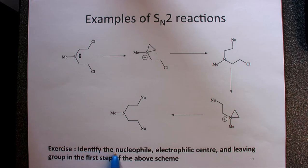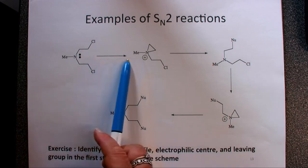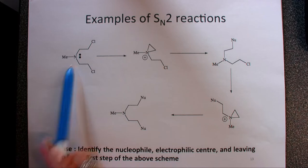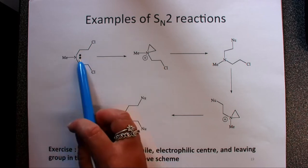Specifically for this exercise, you had to identify the nucleophile, the electrophilic center, and the leaving group in the first step of the above scheme. So the first step is this first step. We're thinking about for this species, where's the nucleophile, where's your electrophilic center, and where is the leaving group.